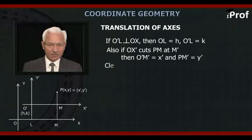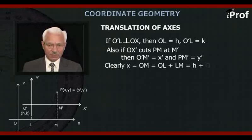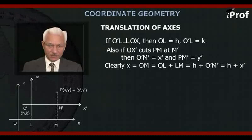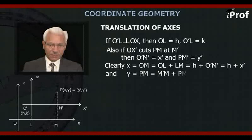Clearly, X equal to OM equal to OL plus LM equal to h plus O'M' equal to h plus X', and Y equal to PM which is equal to M'M plus PM'. That is equal to K plus Y'.